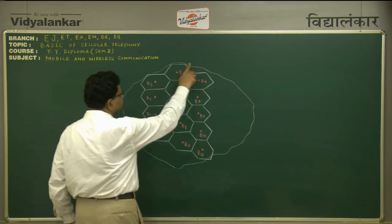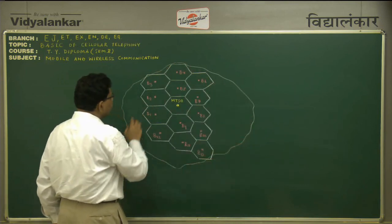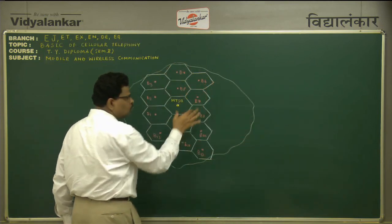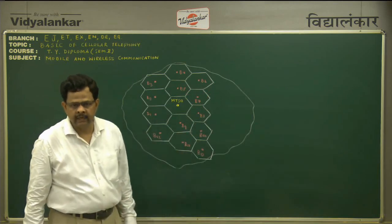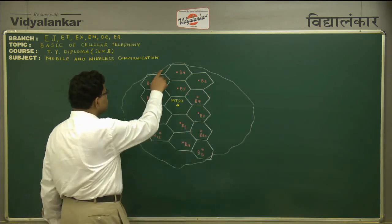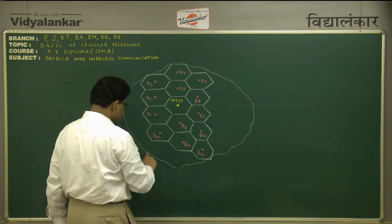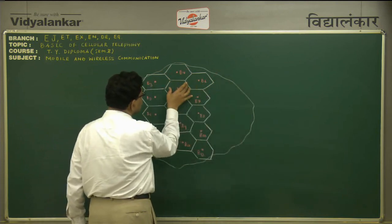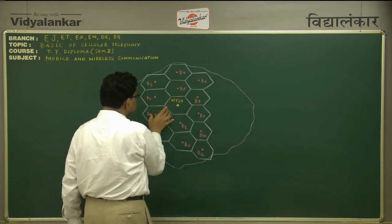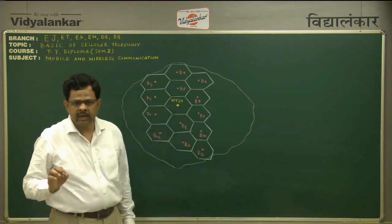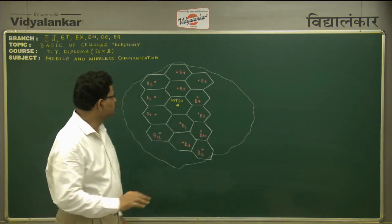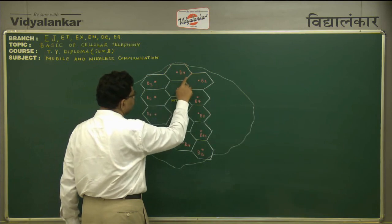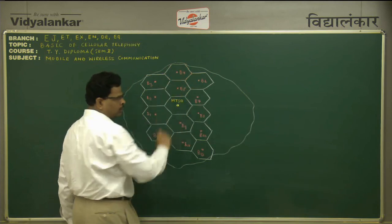The entire geographical area is divided into small areas, each known as a cell. The shape of every cell is a hexagon.